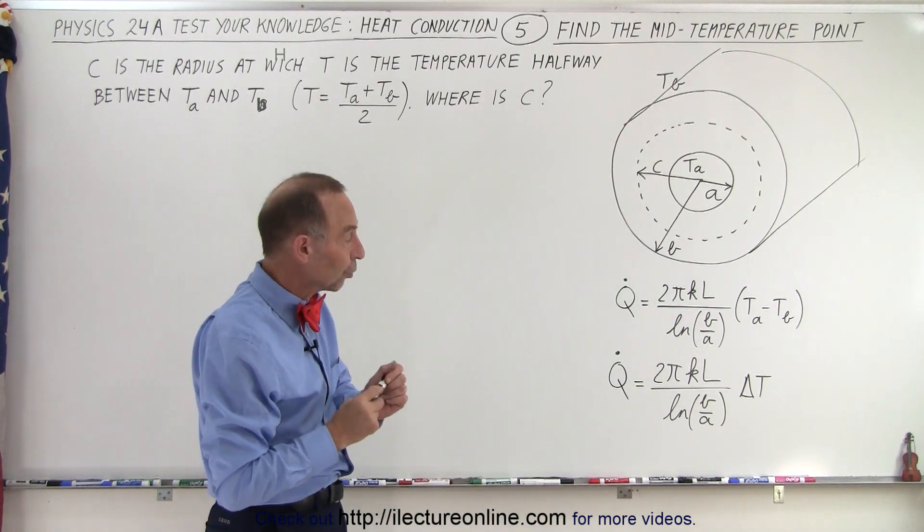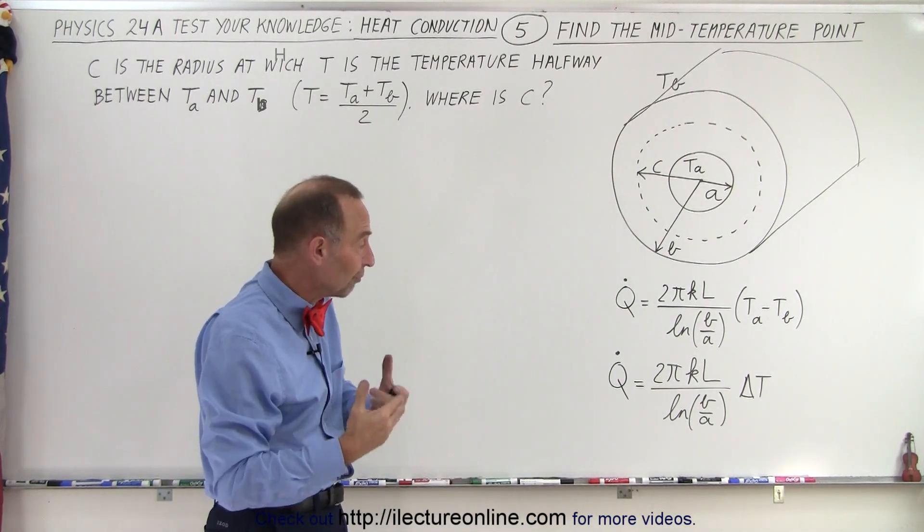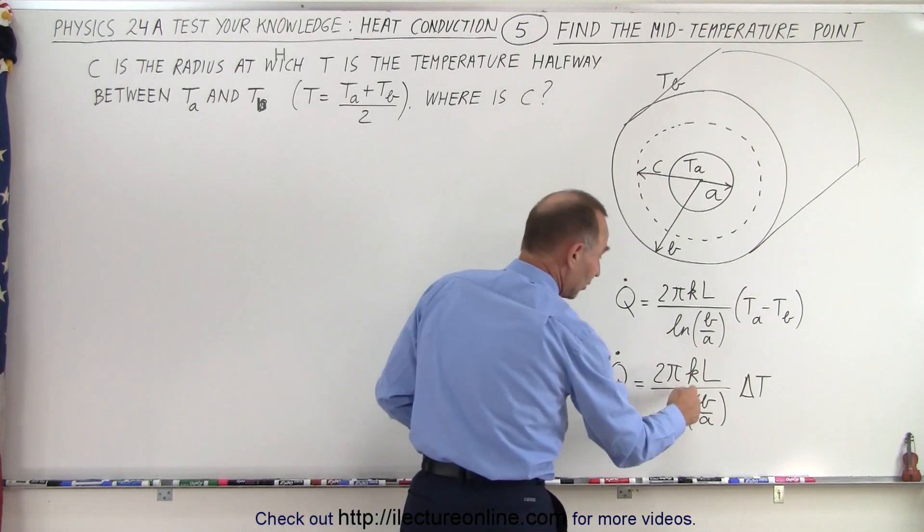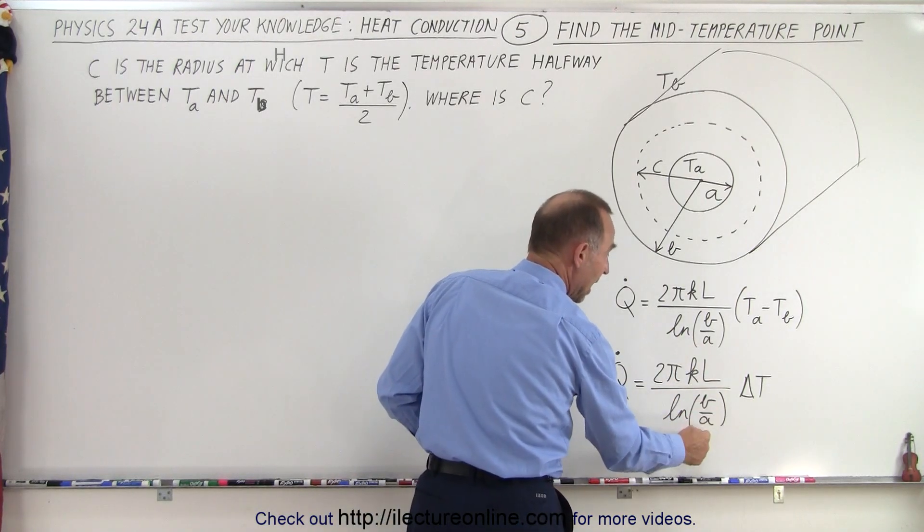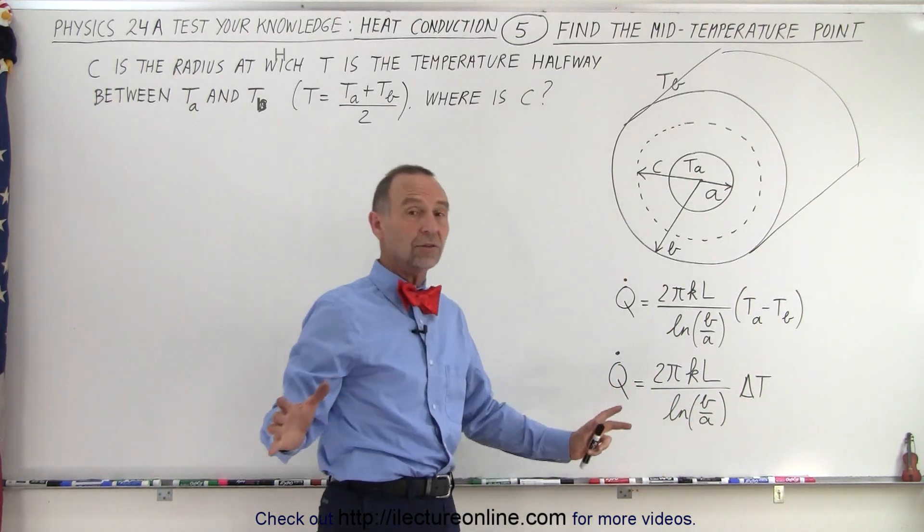So now we realize that the Q dot is actually a constant value. All these numbers here, K, L, B, A, and delta T, all those are constants. And so therefore Q dot is a constant.